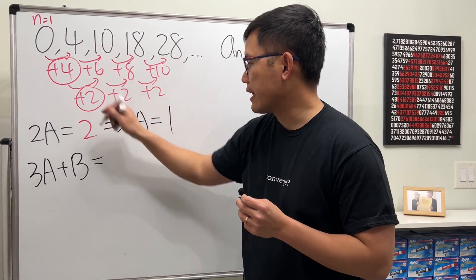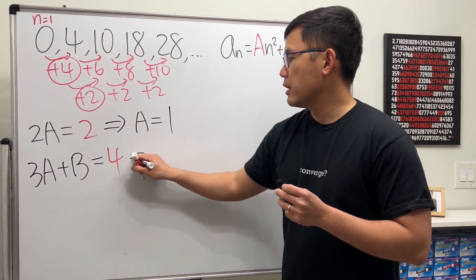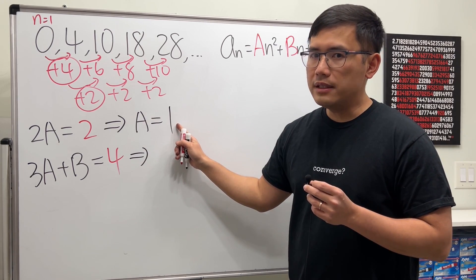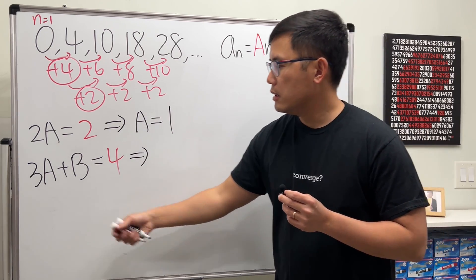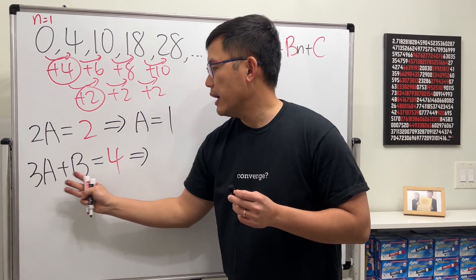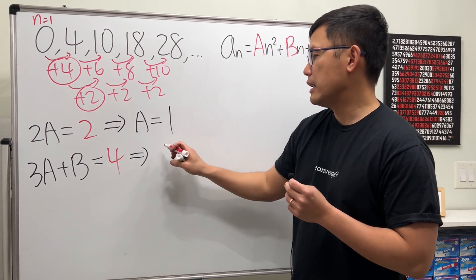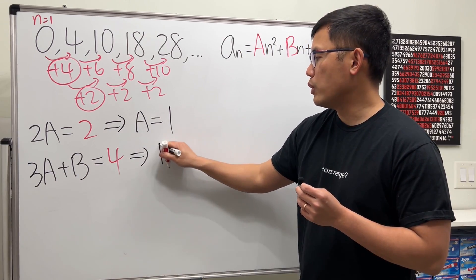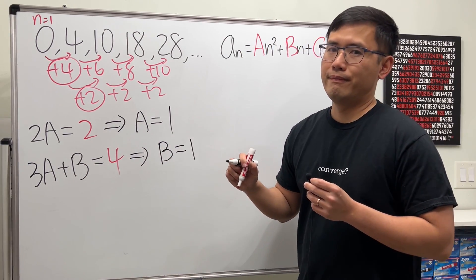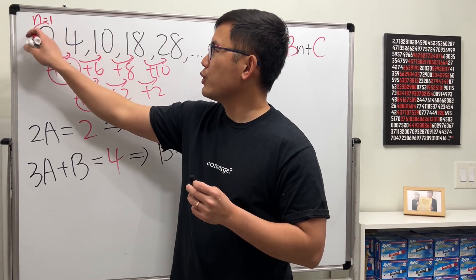Because we know a equals one, so three times one is three. We subtract three from both sides, which means b equals one.